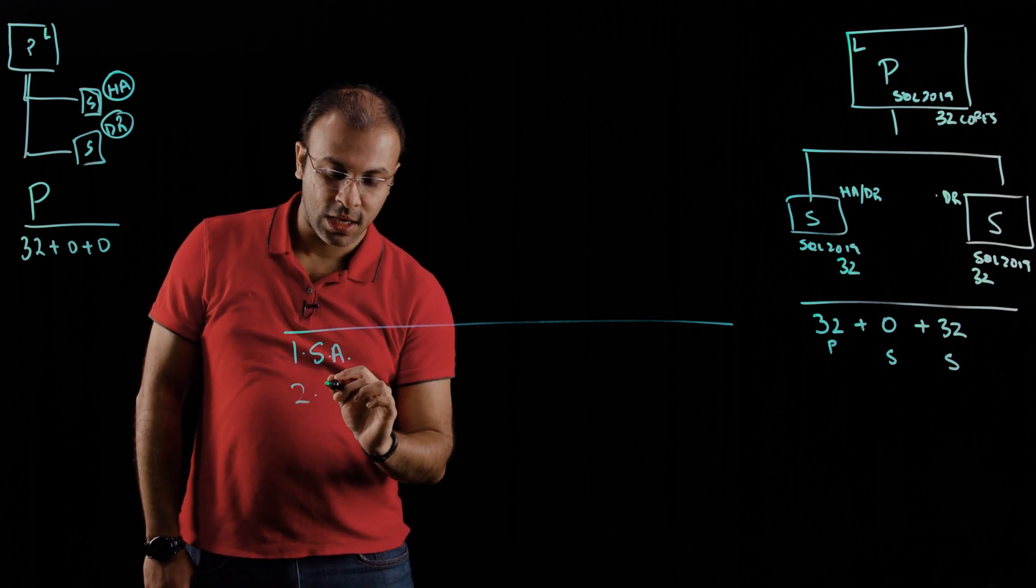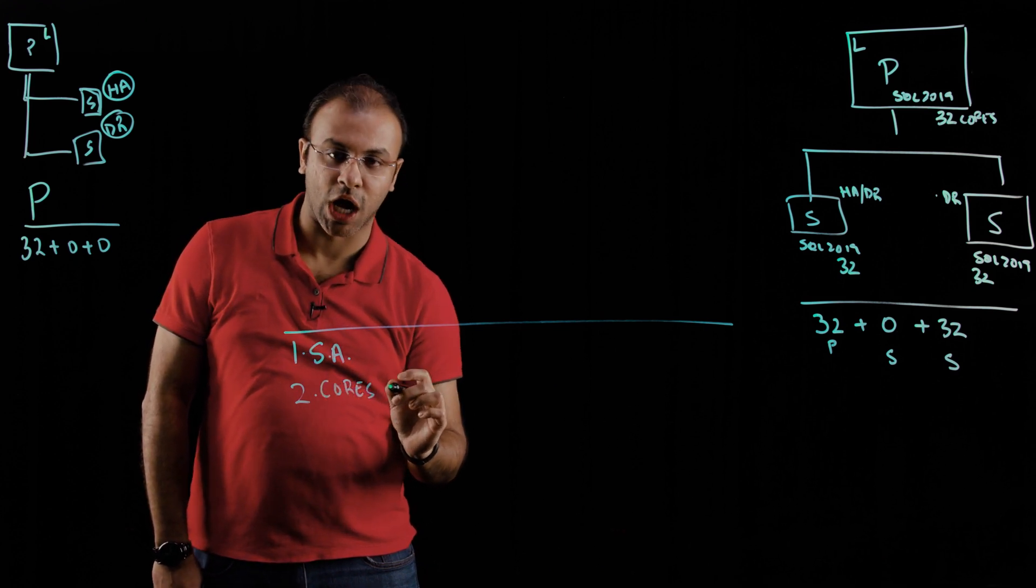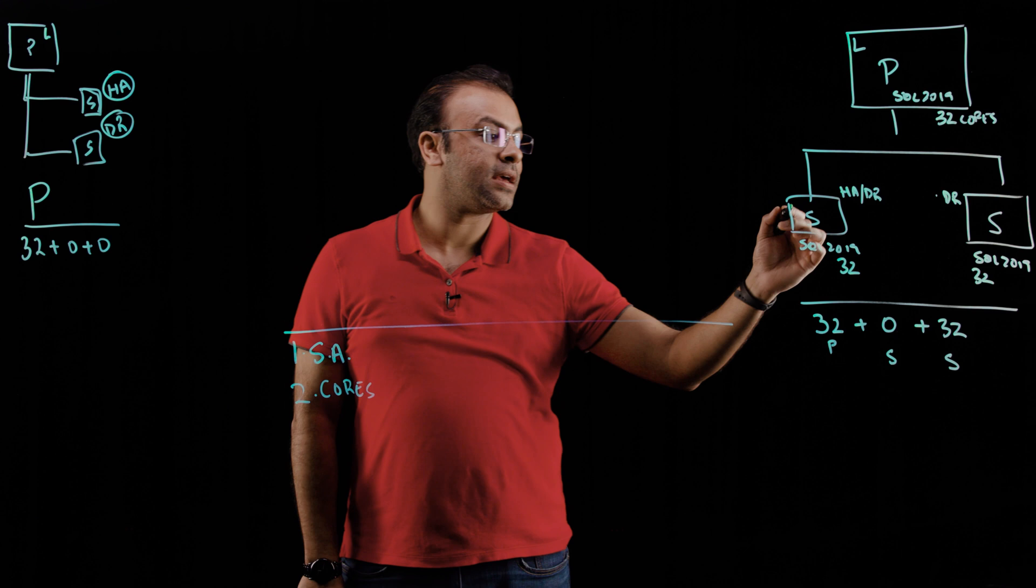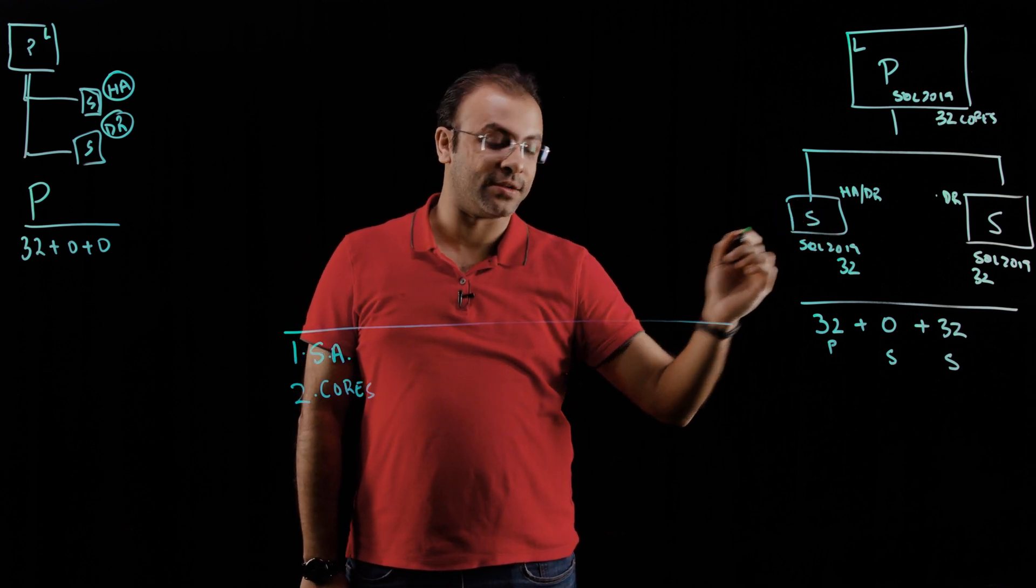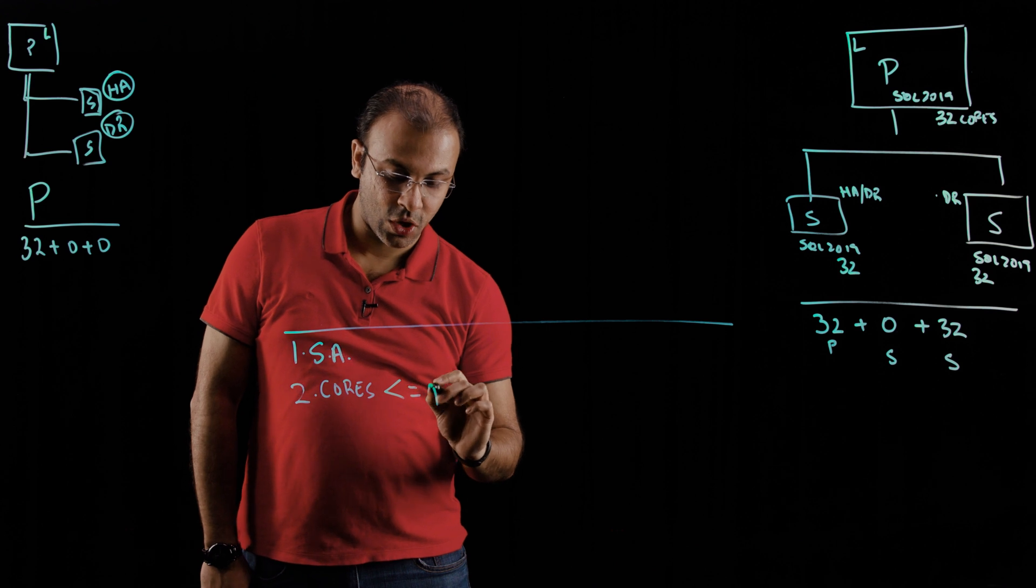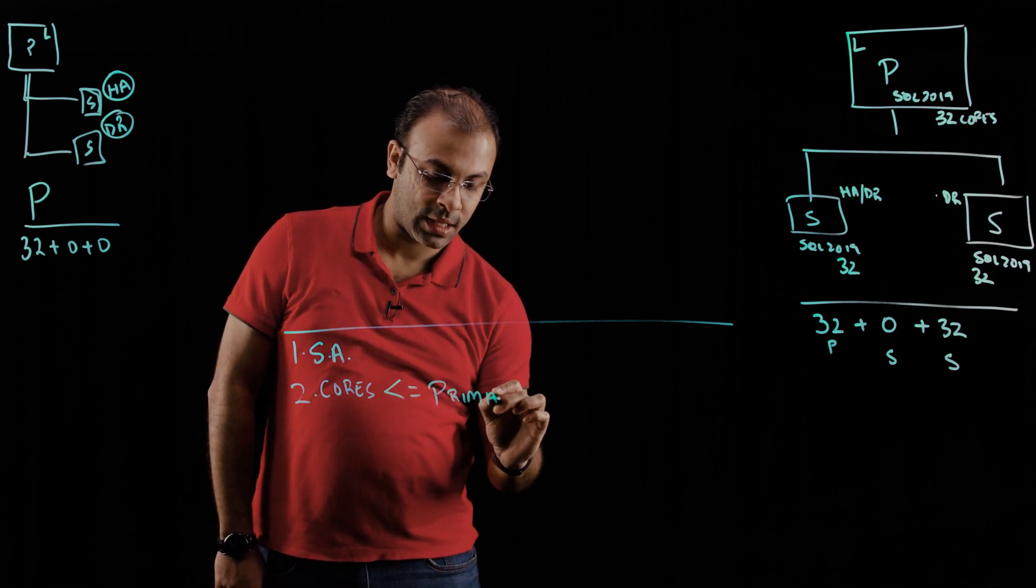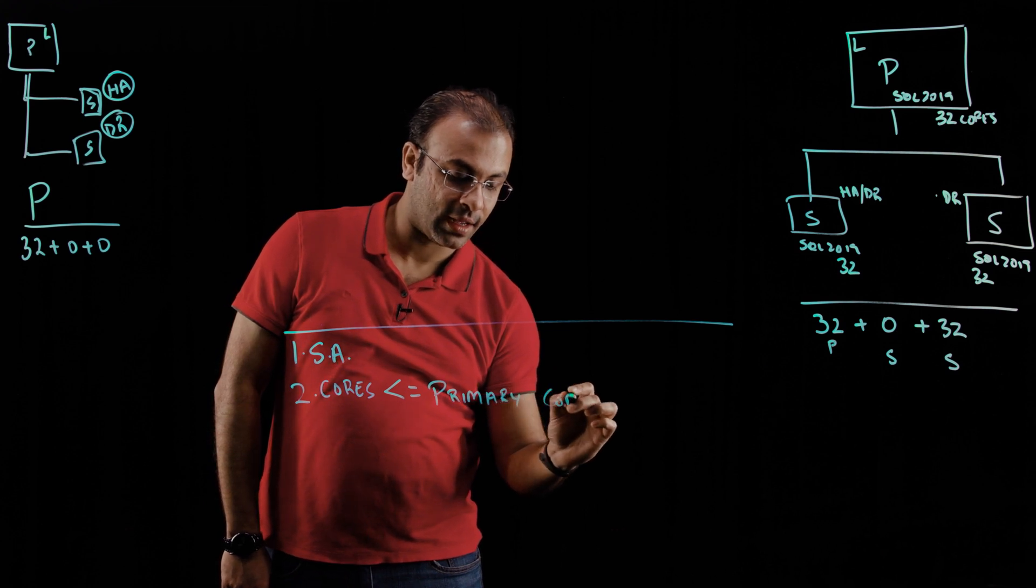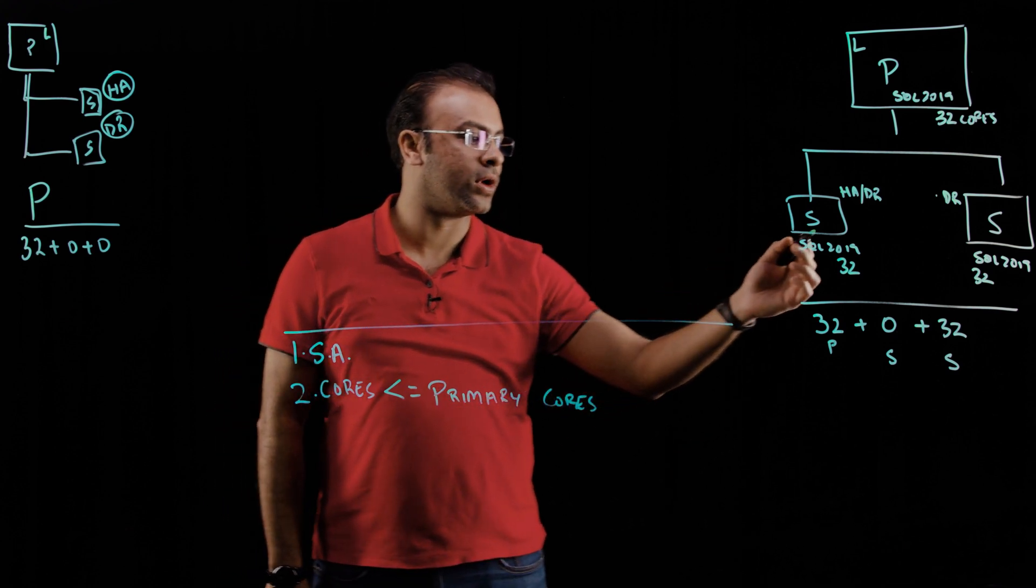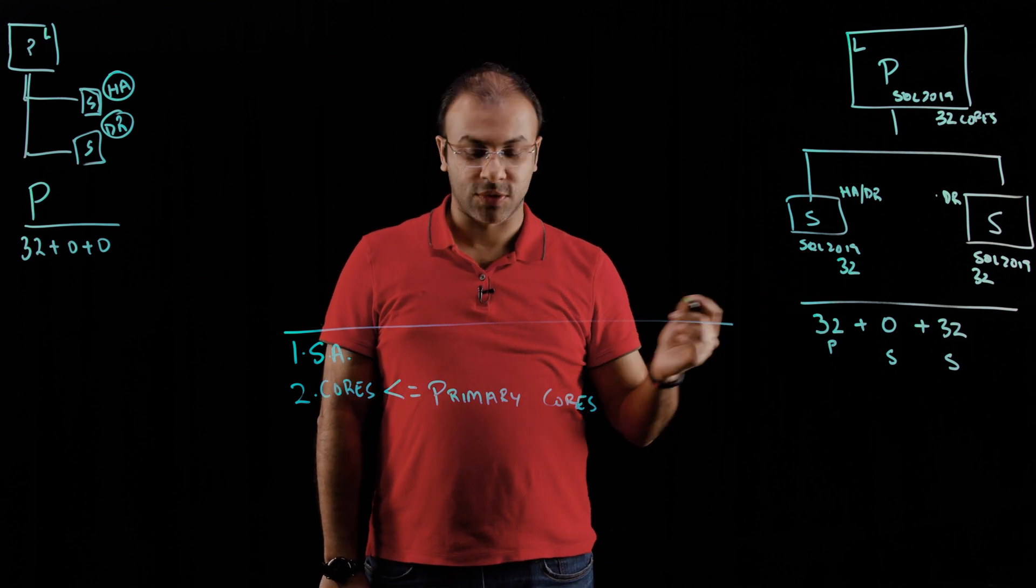You can license the cores on the primary, and the number of cores on the secondary has to be lesser than or equal to the number of primary cores. So if you had, for example, if you had more than 32 here, then the benefit would not apply.